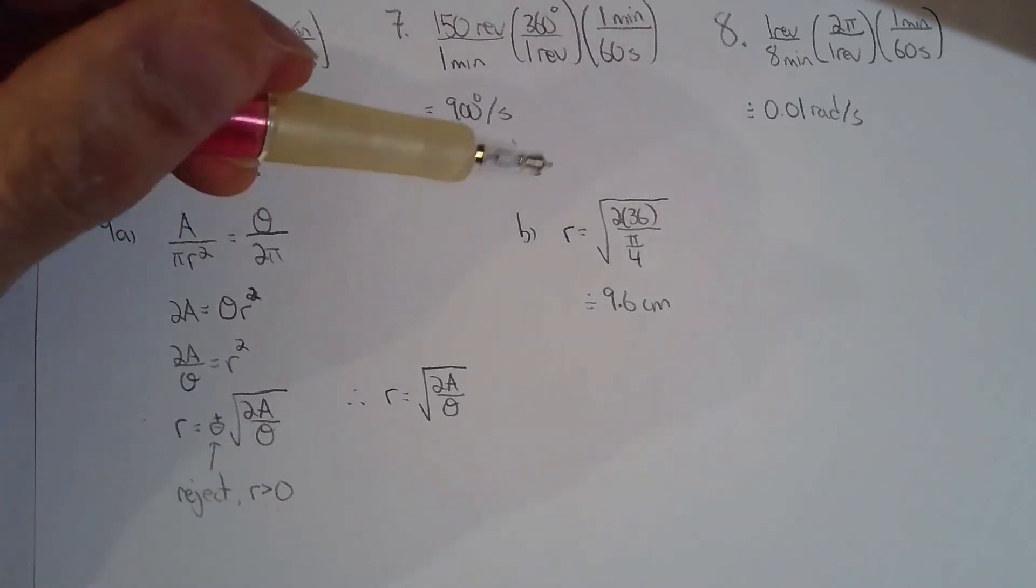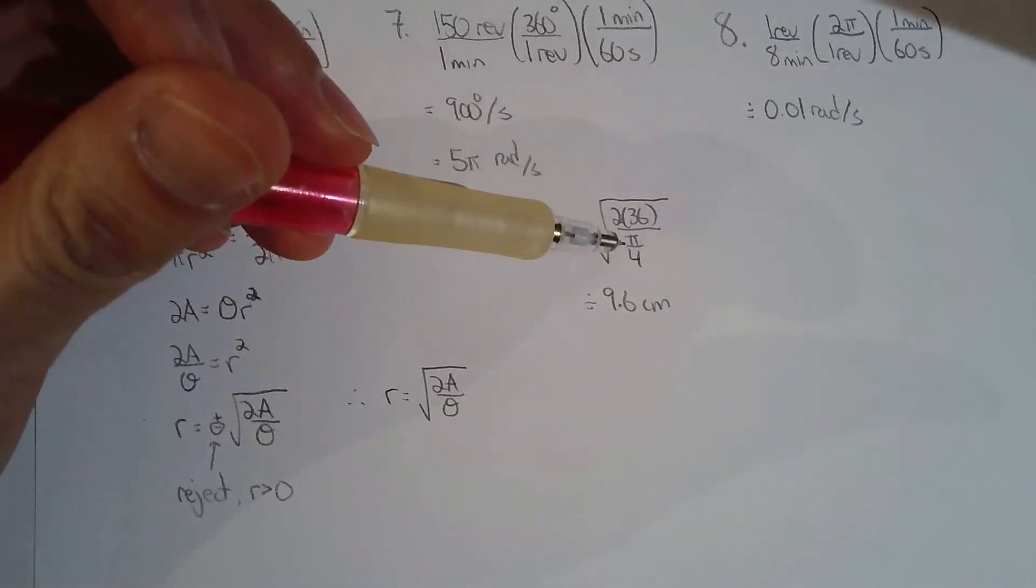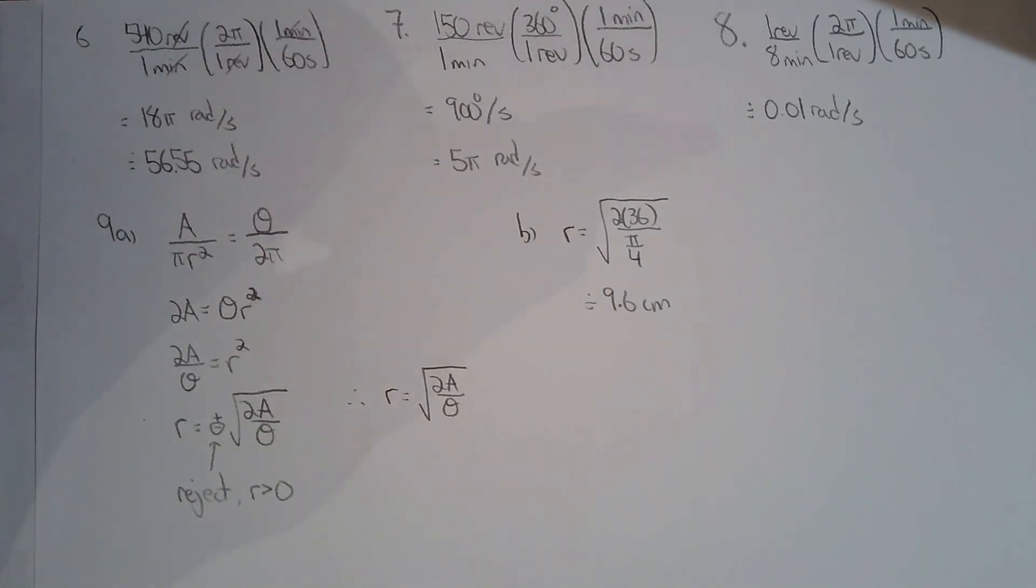For part b, we're just subbing in values. We know what the area of the sector is, and we know the central angle. Sub in the values, and you get the radius to be approximately 9.6 centimeters. Okay, so hopefully that wasn't too bad.